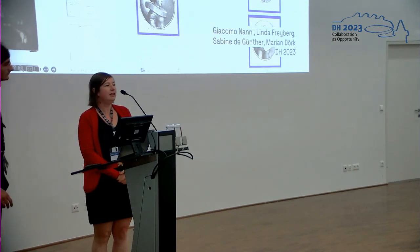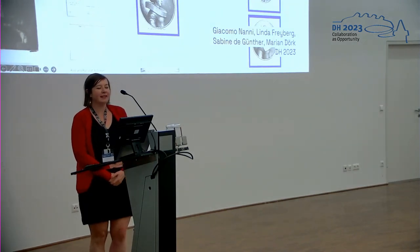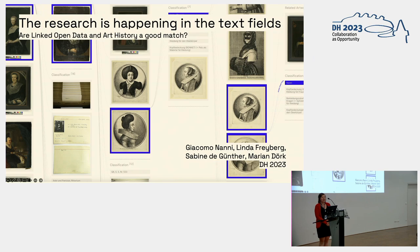Sorry that I have to leave a bit earlier, but Jacquemus will stay afterwards for some questions. We are talking today about the question whether the research is happening in the text fields in regards to art history research as an example.